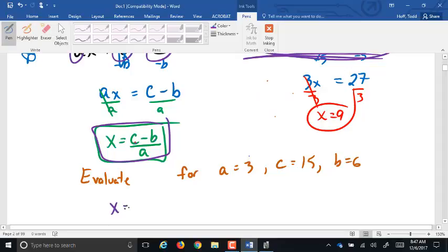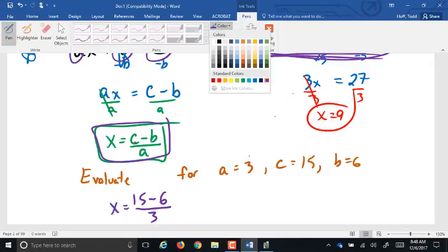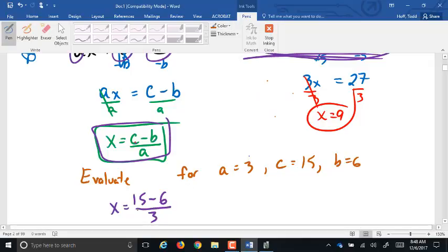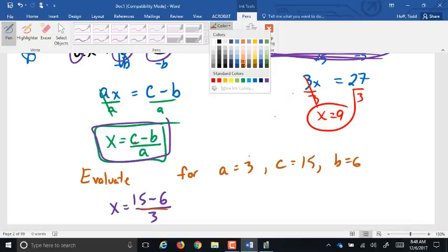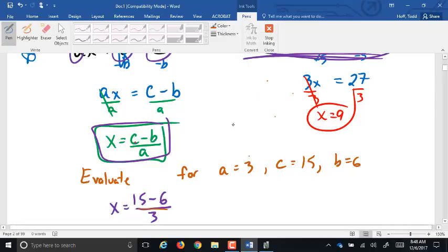Because now, if I ask you to evaluate this for A equals 3, C equals 15, and B equals 6, all I have to do is replace those letters with the numbers and do the order of operations. So X is going to equal C is 15 minus B is 6 over A is 3. Well, that fraction bar there says we're going to have to divide, but it's also an enclosing symbol. So we have to do what's on top first. What's 15 minus 6? 9. Now it's just 9 over 3, which is 9 divided by 3, which is 3.